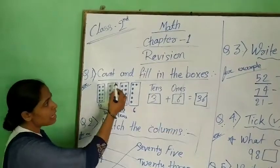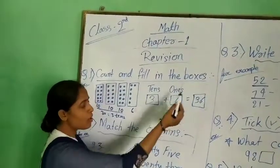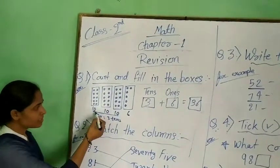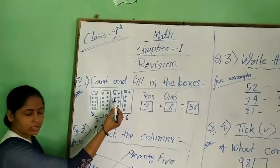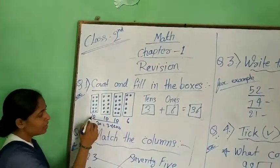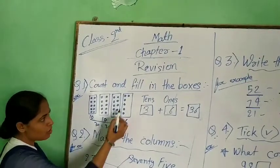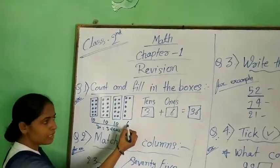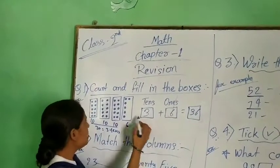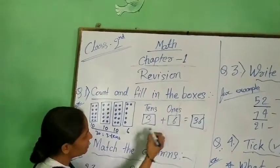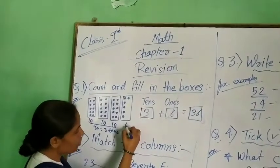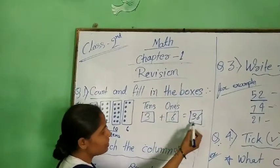Question first is count and fill in the boxes. One box is 10 dots, second box is 10 dots, and next box is 10 dots. Three boxes is 10 dots and one box is 6 dots. Three boxes is 10 dots, it means 3 tens and 6. One box is 6 dots, it means 6 ones. Equal 36.